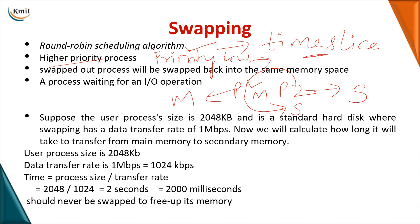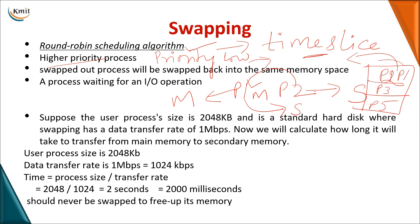Consider this pictorial representation: initially P1, P3, and P5 are in memory. P1 is swapped out and P2 comes in. When P1 needs to come back, whether it returns to the same memory location or not depends on address binding. With execution-time binding, the program can move to any location, so the previous and current location may differ.